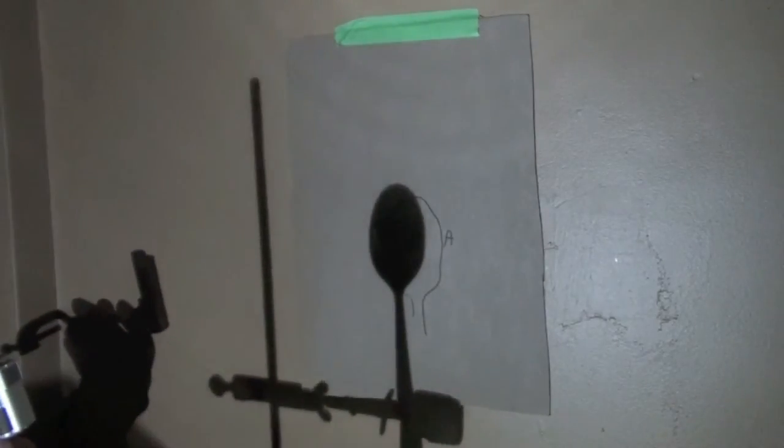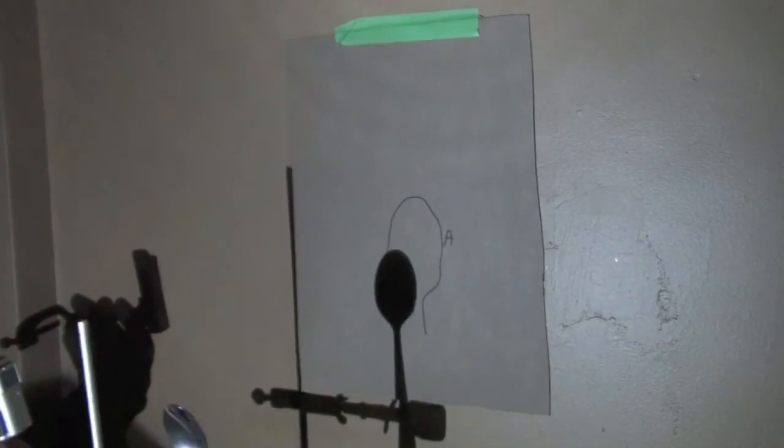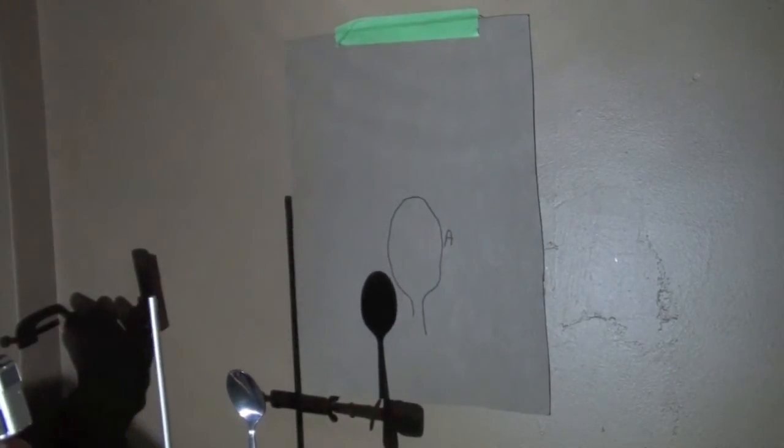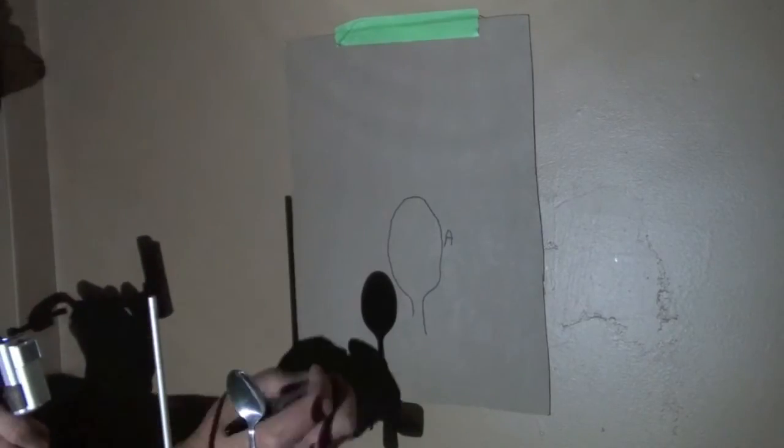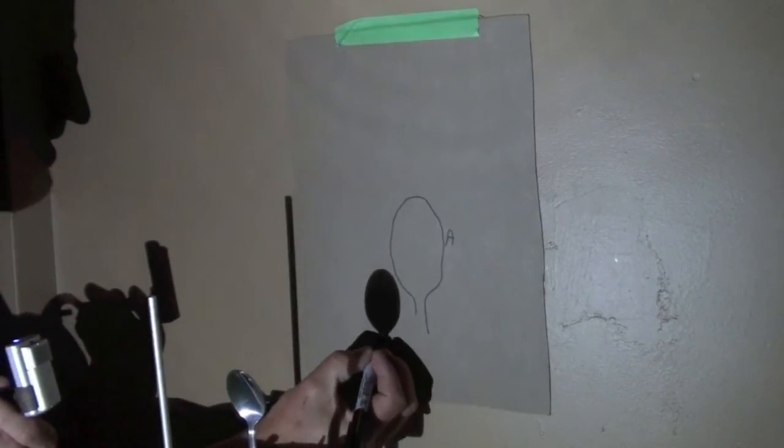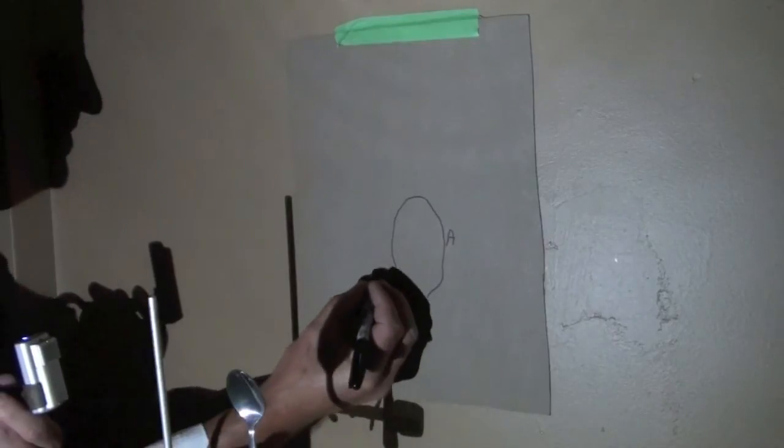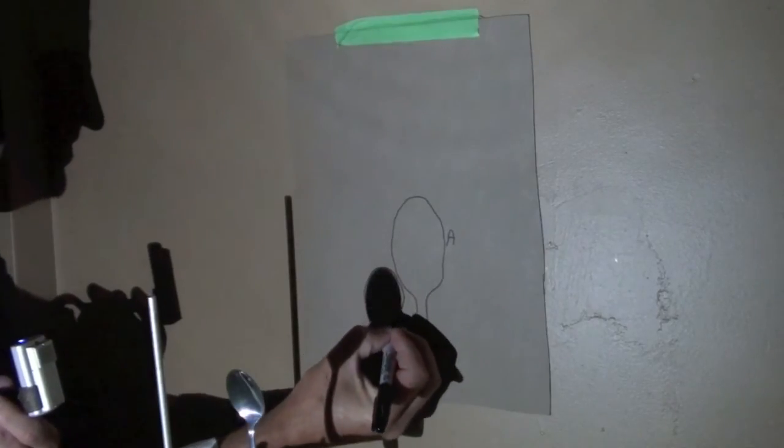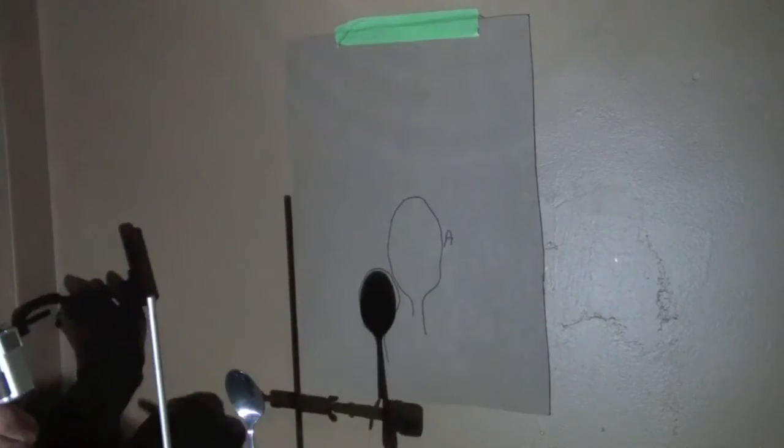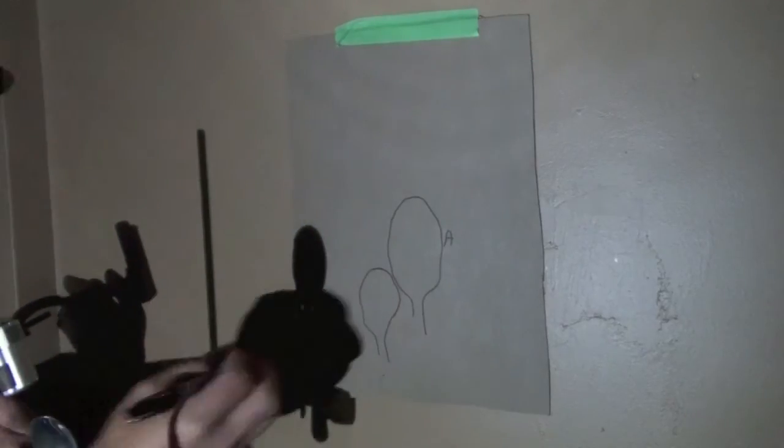Now, we'll move our spoon closer to the screen. And we'll do the same thing. We'll do another tracing of the outside of the spoon. And we'll call that B.